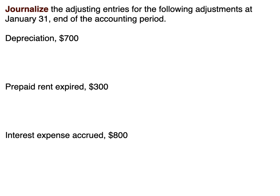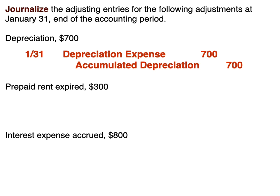So whether it's building or equipment, in this case we're going to debit depreciation expense for $700 and credit accumulated depreciation. Now keep in mind, accumulated depreciation is a contra asset account. So it does appear on the balance sheet in the asset section alongside its companion account, whether that's the building or equipment, and it effectively reduces your assets.